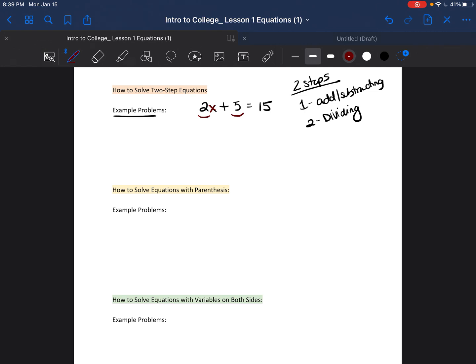There are two things that are causing the x to not be by itself: the number 2 and the number 5. We're going to get rid of the number that is not attached to the x first. So the number that's not attached to the x is the plus 5. The opposite of plus 5 is minus 5. So we're going to minus 5 from both sides, and we're left with 2x equals 10.